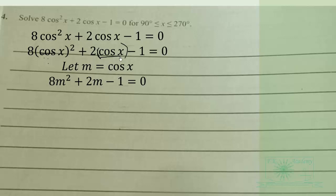So this is a quadratic equation in M and we can factorize this by splitting the middle term. When you multiply this by this you get negative 8, and the factors of negative 8 that will add up to 2 are 4 and negative 2.